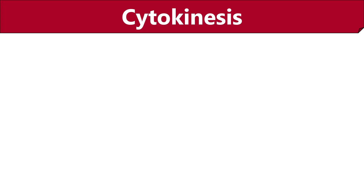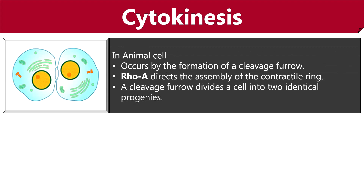In M phase, cytokinesis is the second process that divides a parent cell into two identical daughter cells. In animal cells, cytokinesis occurs through the formation of a cleavage furrow by the invagination of the plasma membrane. At the site of the cleavage furrow, a contractile ring forms which contains actin and myosin-2 filaments. Rho A is a protein that directs the assembly and function of the contractile ring. Phosphorylation of Rho A causes contraction of actin and myosin-2 filaments, resulting in the formation of the cleavage furrow, which deepens until the cell eventually divides into two daughter cells.